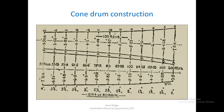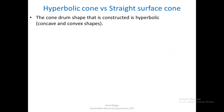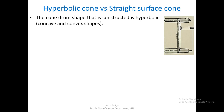As we can see, the top chondrom profile is slightly concave and the bottom chondrom is convex. Let us talk about what are hyperbolic cones and what are straight-faced cones. The chondrom shape constructed is hyperbolic — that is the concave and convex shapes we have just seen. This is the image of that hyperbolic cone which was on the conventional roving frame, showing the concave and convex profiles.